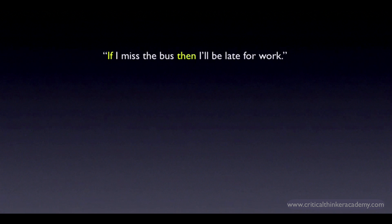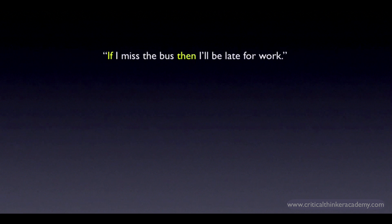Here's our conditional: if I miss the bus, then I'll be late for work. It's composed of two separate claims — I miss the bus, and I'll be late for work. The conditional claim is telling us that if the first claim is true, then the second claim is also true.